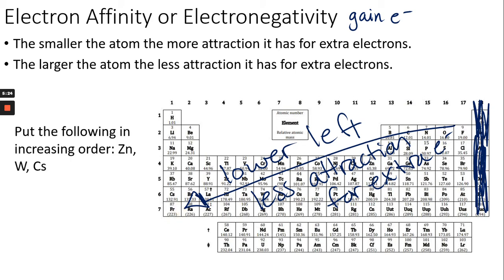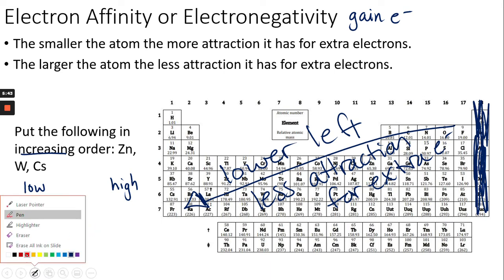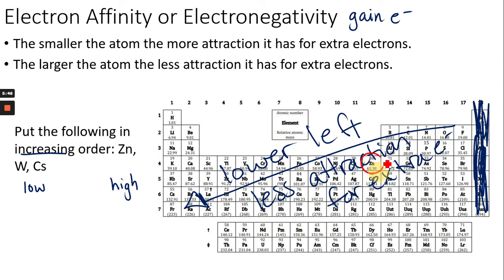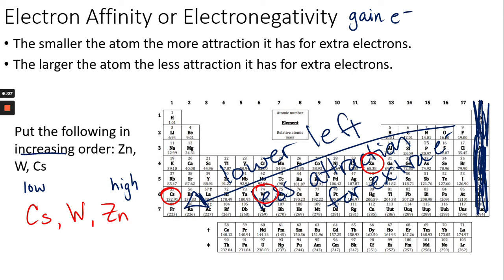For a question asking to put elements in order of increasing electron affinity, start with the lowest and go to the highest — from atoms that don't attract electrons to those that do. Finding zinc, tungsten, and cesium on the periodic table: cesium is the largest and won't attract electrons easily, so it has the lowest. Then tungsten, and then zinc — the smallest of the three — attracts electrons most easily.